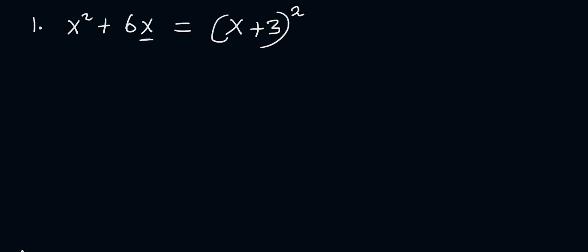The final step is to take this positive 3, square it from the value we have here. So plus 3 squared gives us 9. So just subtract it: negative 9. And this becomes the final answer to this question. I hope it makes sense.